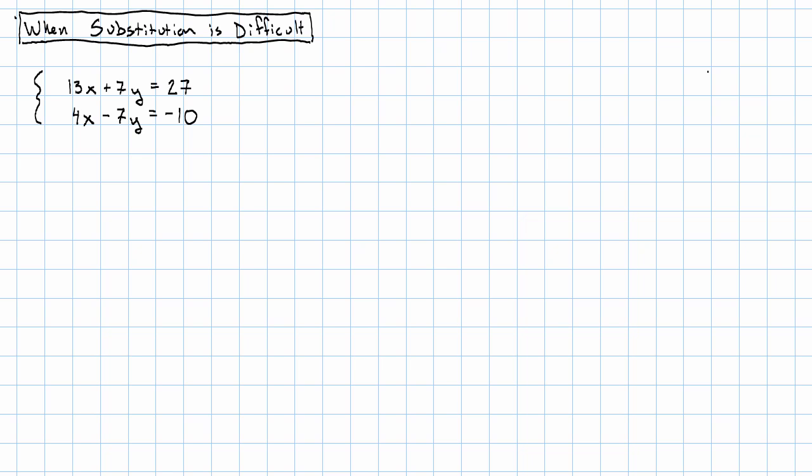We could solve this system using substitution. What would we do? Just what we always do in substitution. I don't see either one of these equations being particularly better than the other, but I suppose dividing by 4 is better than dividing by 13 or 7. So I'm going to choose to solve this equation for x.